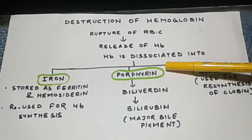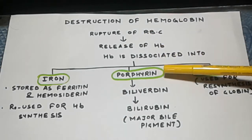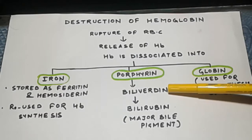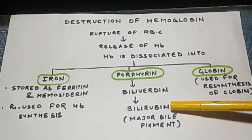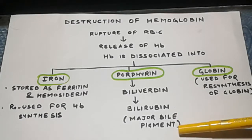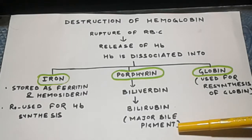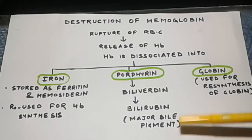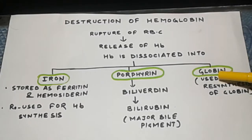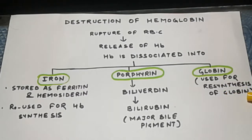Porphyrin is converted into biliverdin, and biliverdin is then converted into bilirubin. Bilirubin is a major bile pigment. Globin is a protein and is used for re-synthesis of globin.